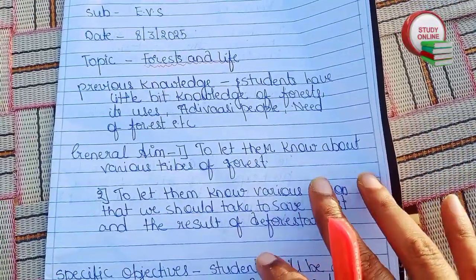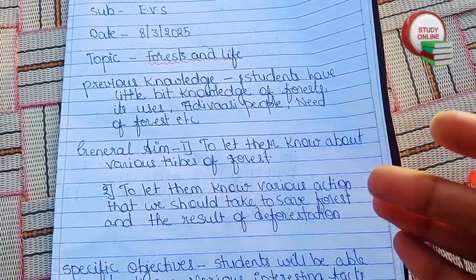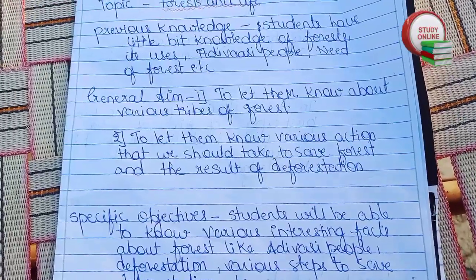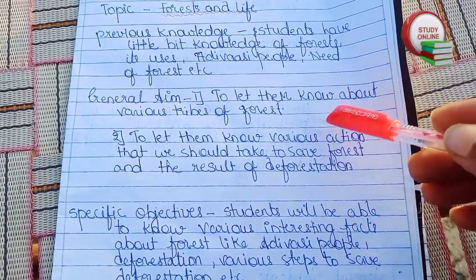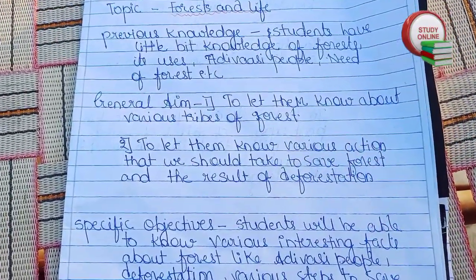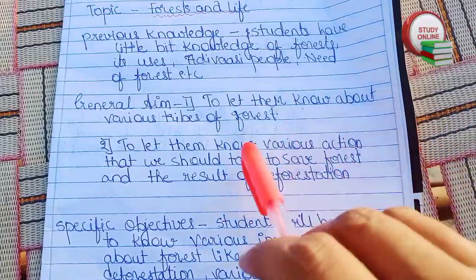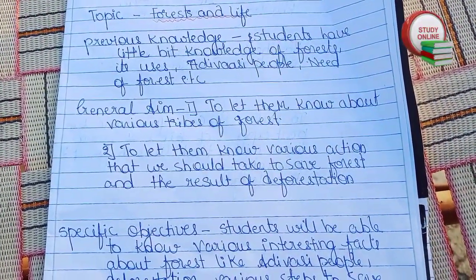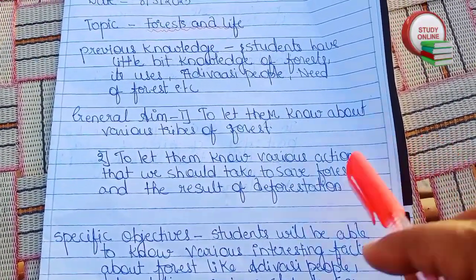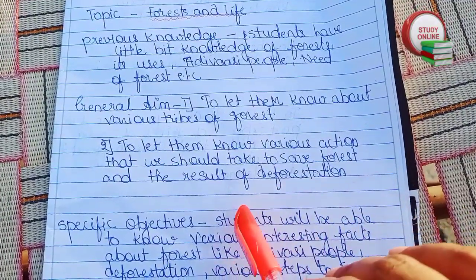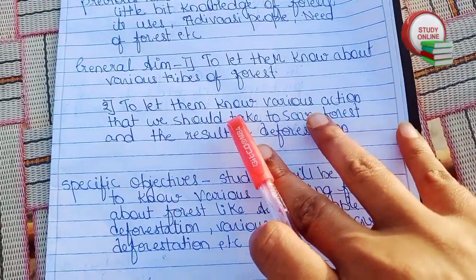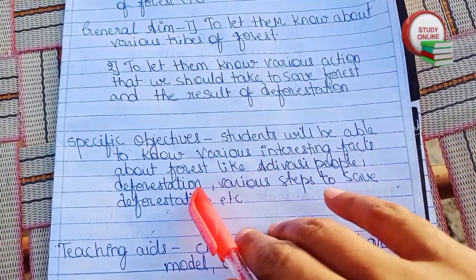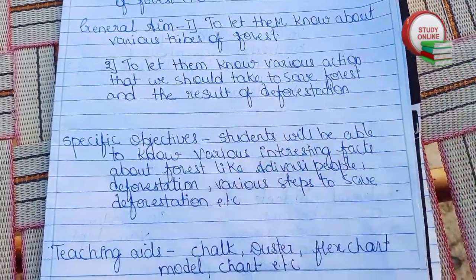For general objectives, we have to write all the things we basically want to teach to students. Here you can see we want to tell them about various types of forests of India, let them know various actions we can take to save forests, and the results of deforestation. I have added two points here for specific objectives.